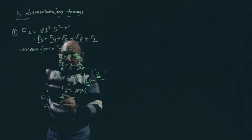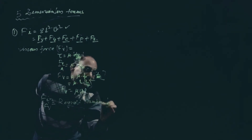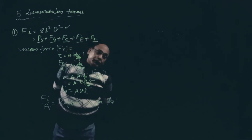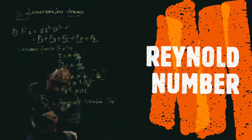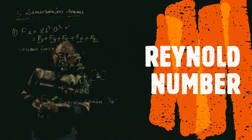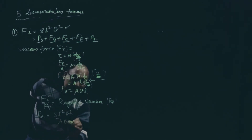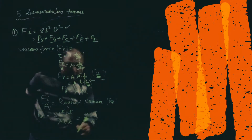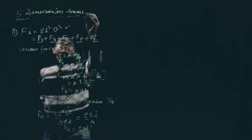Let us start with the first: Fi/Fv is called Reynolds number, denoted Re. This is a very famous number used not only for derivation but also for solving numerals — based on Re we find the type of flow. Re = Fi/Fv = ρL²V² / (μVL). Cancelling L and V: Re = ρVL/μ. This is the first dimensionless number, the Reynolds number.